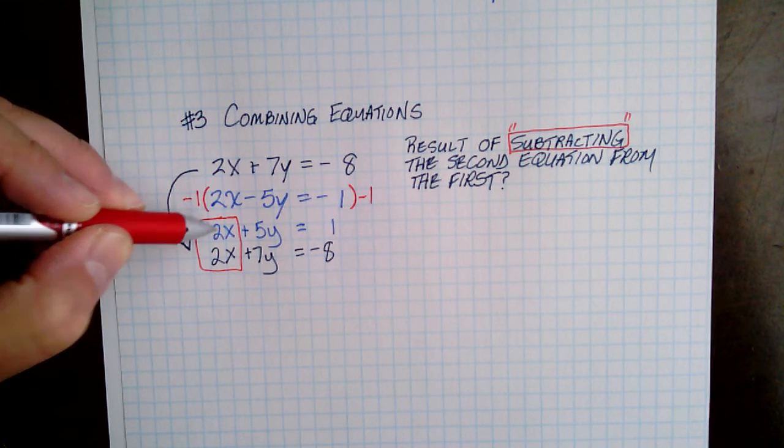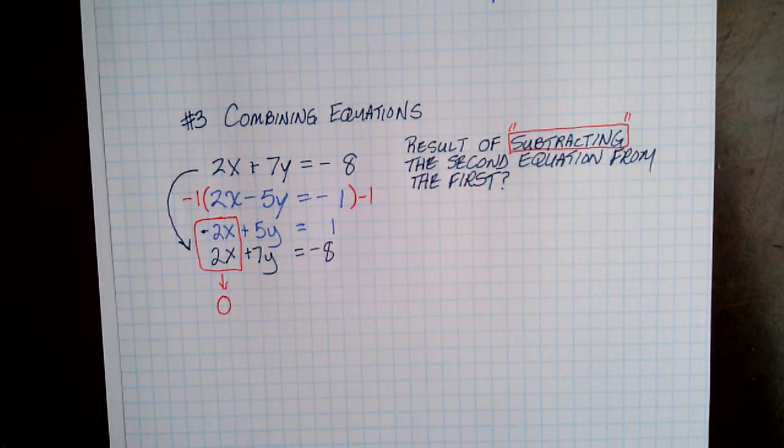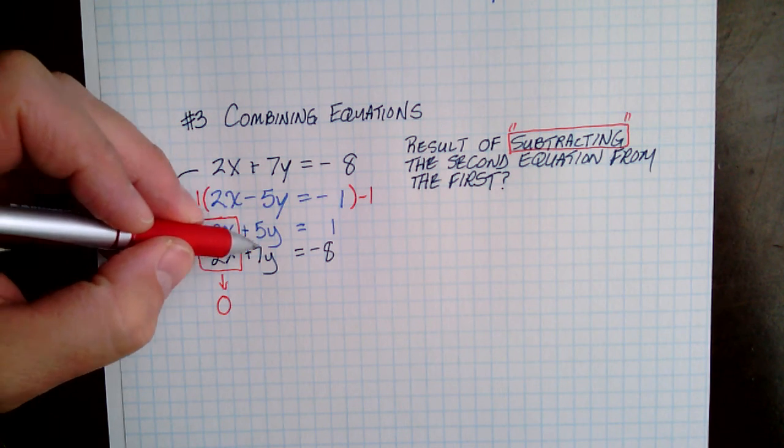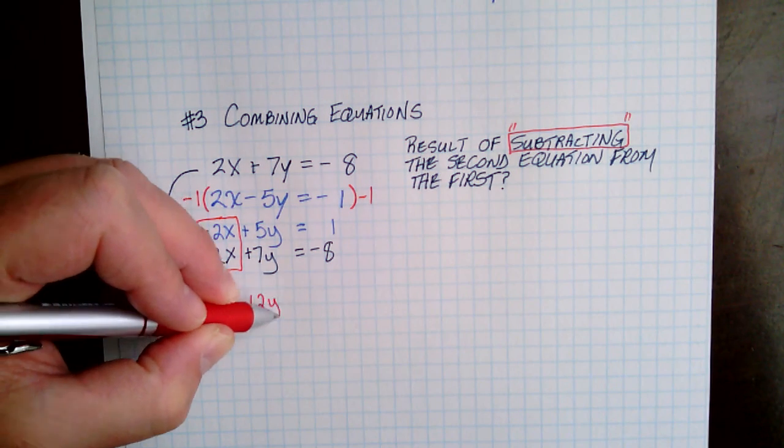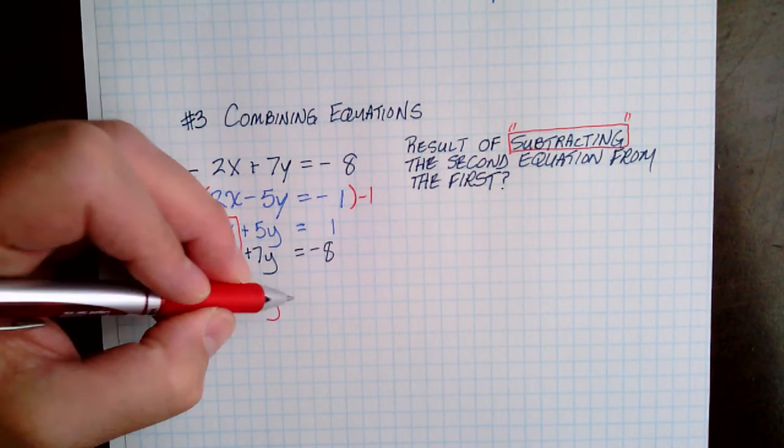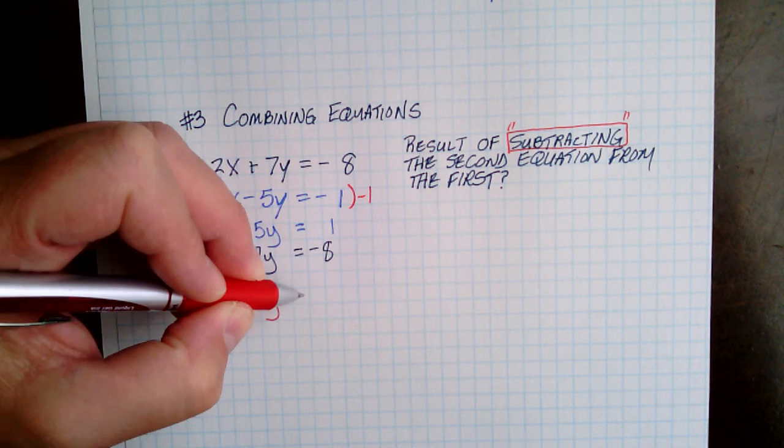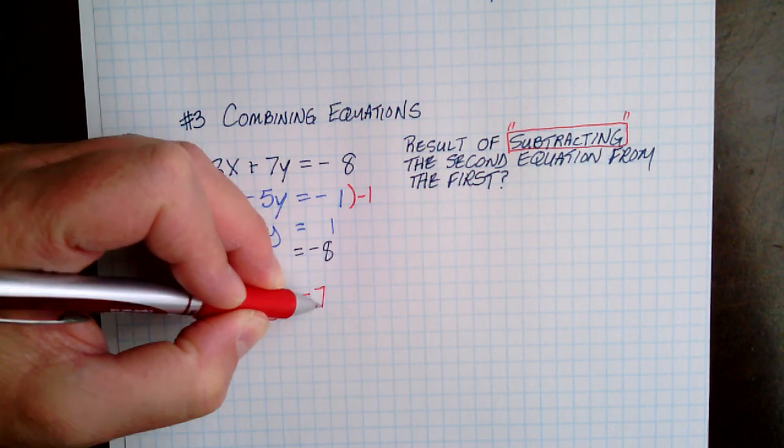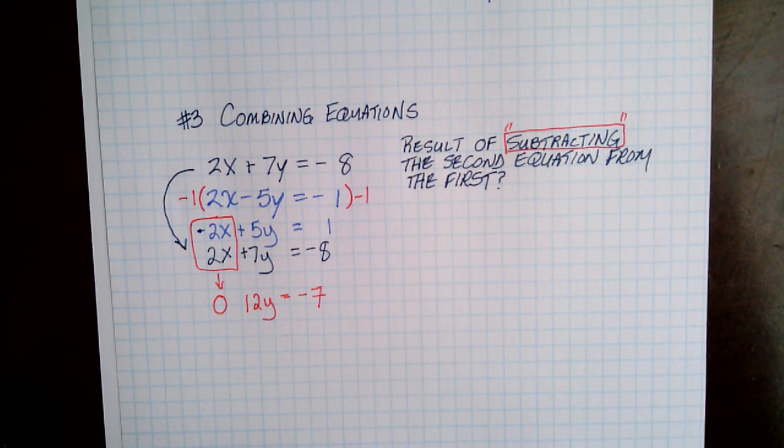So when I combine those two, I get a 0. We know that as elimination. When I combine these two, I get a 12y, and then when I combine these two, I end up getting a negative 7. So that's the result of combining those two equations.